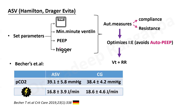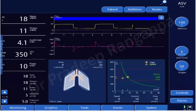Clinical evidence: Biechers et al. from Germany studied ASV versus conventional ventilation in ARDS. CO₂ levels were similar between groups, but mechanical power was significantly lower in the ASV group — 16 joules versus 18.6 joules in the conventional group. This supports that adaptive support ventilation may beneficially reduce mechanical power in addition to PEEP optimization, sedation, analgesia, and dead space reduction.